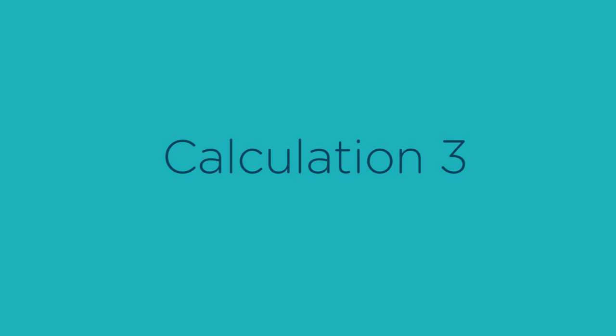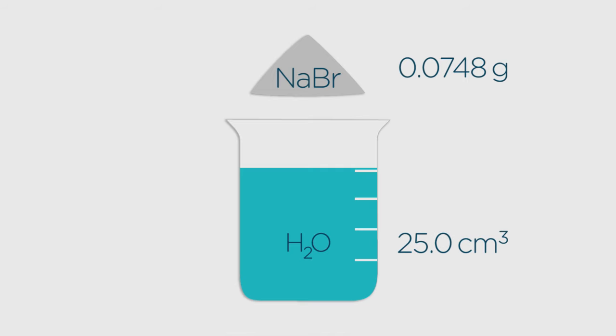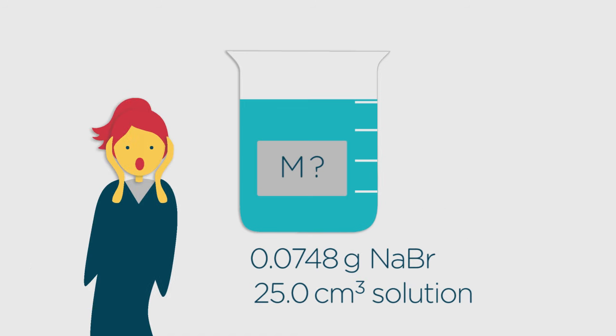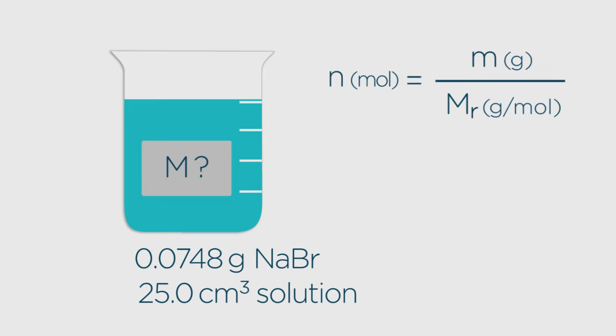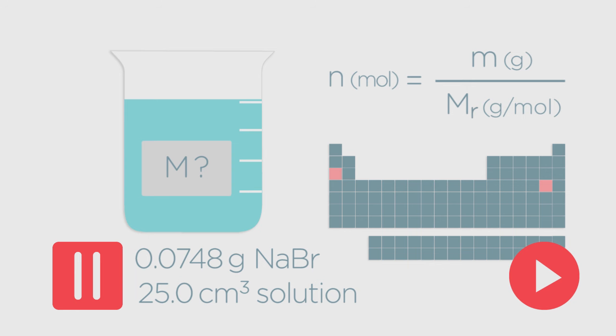OK, a tough challenge to finish. You've dissolved 0.0748 grams of sodium bromide salt in 25.0 centimetres cubed of water. What's the molarity? Don't panic. Simply use this equation, which lets you convert mass into moles, and use your periodic table to find the molar ratio of sodium bromide. Pause, calculate and resume.